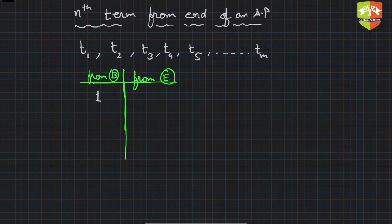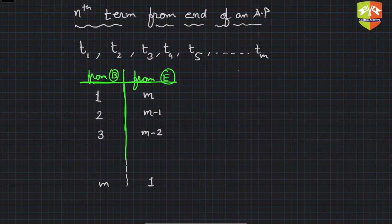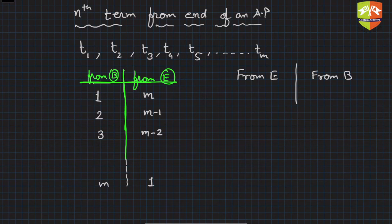From beginning if it is first, from end it will be the mth position. If it is second from beginning, it will be m minus one from end. If it is the third term from beginning, it is the (m minus 2)th term from the end. Hence if it is mth from beginning, it will be the first from the end. Now let's reverse this process — I'm now taking from end.